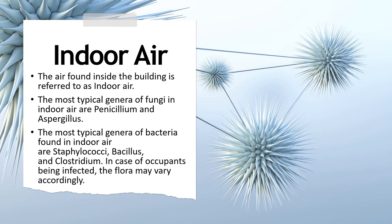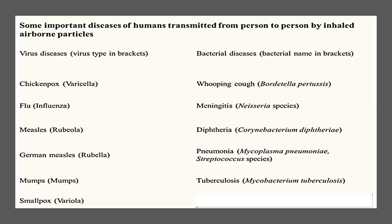In case of occupants being infected, the flora may vary accordingly. These are some examples of human diseases that can be transmitted by inhaling airborne droplets. Viral diseases include chickenpox, influenza, measles, German measles, mumps, and smallpox, while examples of bacterial diseases include whooping cough, meningitis, diphtheria, pneumonia, and tuberculosis.